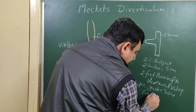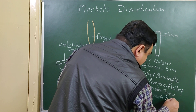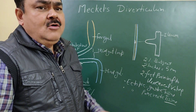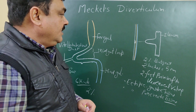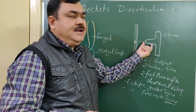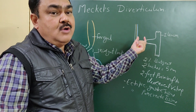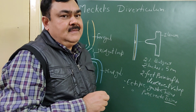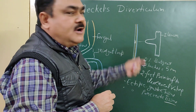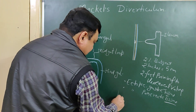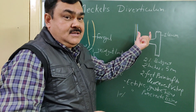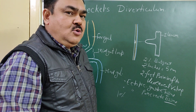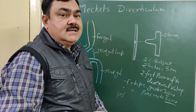In some cases there is ectopic pancreatic tissue, and pancreatic juice is secreted, which may cause pancreatic ulcer. The most common complication is bleeding, occurring in about 20 to 30 percent of cases. The next complication is obstruction, which may cause intestinal obstruction in about 20 to 25 percent of cases. Diverticulitis occurs in about 10 percent of cases.